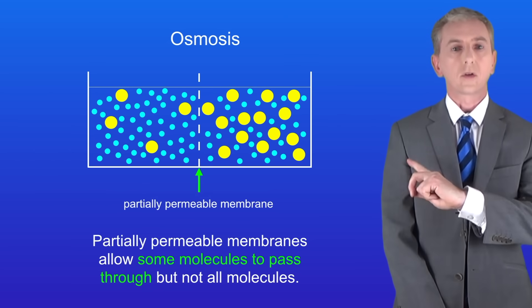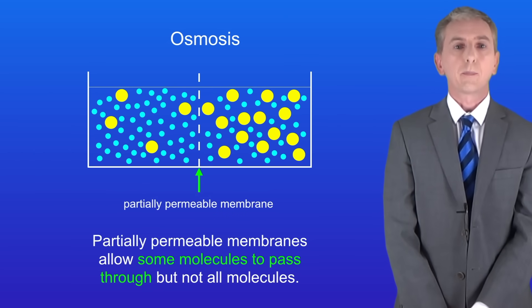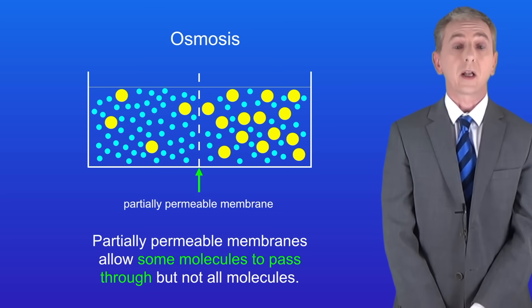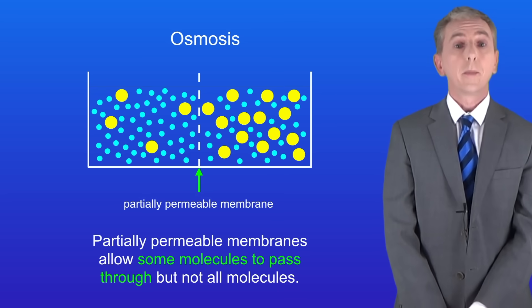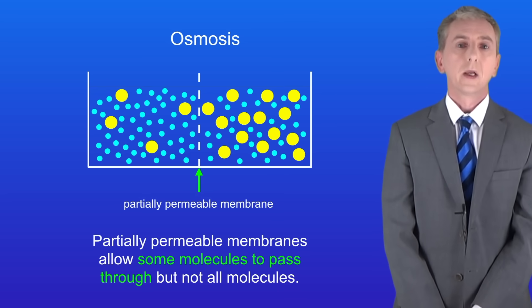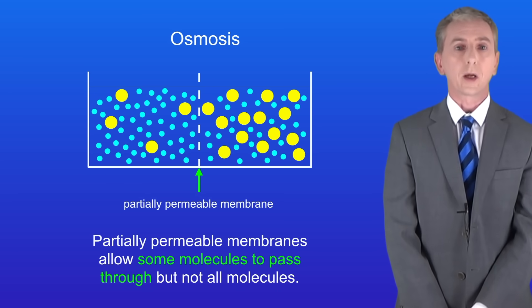Here I've taken the two solutions and I've separated them using a partially permeable membrane. Partially permeable membranes allow some molecules to pass through but not all molecules. So this membrane allows water molecules to pass through but not sugar molecules.